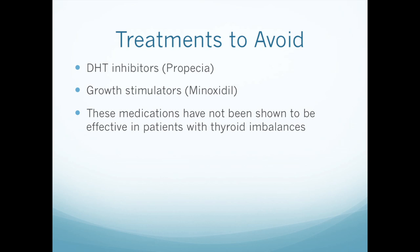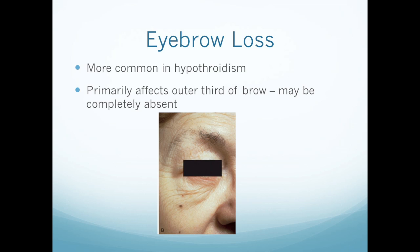Moving on to eyebrow loss — this seems to be much more common in hypothyroidism, not as common when you have high levels. It primarily affects the outer third of the brow. In contrast to head loss, you can actually have a complete absence of the brow. The head is just thinning — you don't have actual patches of baldness. But unfortunately, with eyebrows, you can actually completely lose the lateral third of the eyebrow, though more often it's just very, very thin.